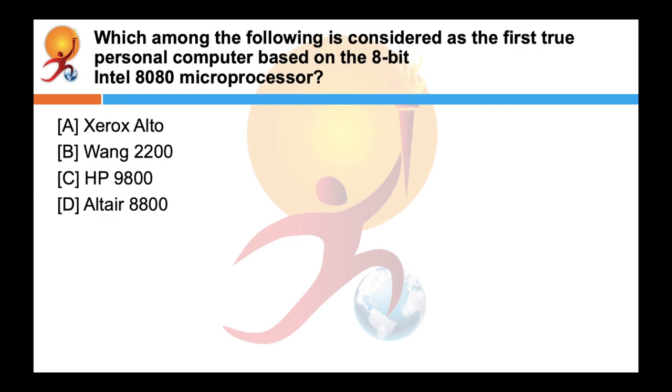Which among the following is considered as the first true personal computer based on the 8-bit Intel 8080 microprocessor? The correct answer is Altair 8800. It was created by Micro Instrumentation and Telemetric Systems. It was based on 8-bit Intel 8080 microprocessor and was introduced in the year 1974.